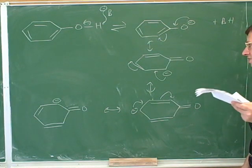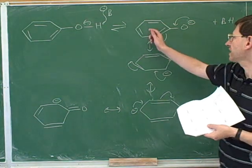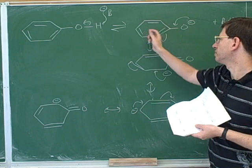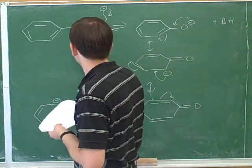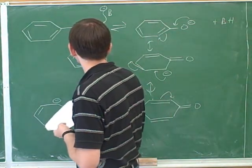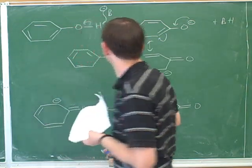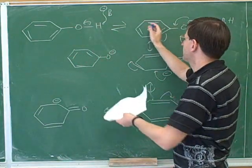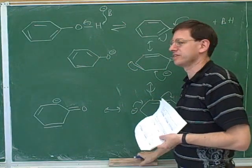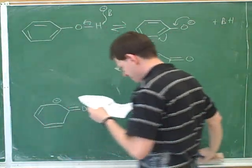There's even more resonant structures that we can draw here too because in this case there's another resonant structure where the double bonds are in a different place. These two are equivalent to each other—you could put the double bonds here or here. So there's even more resonant structures, but this gives us the general idea.